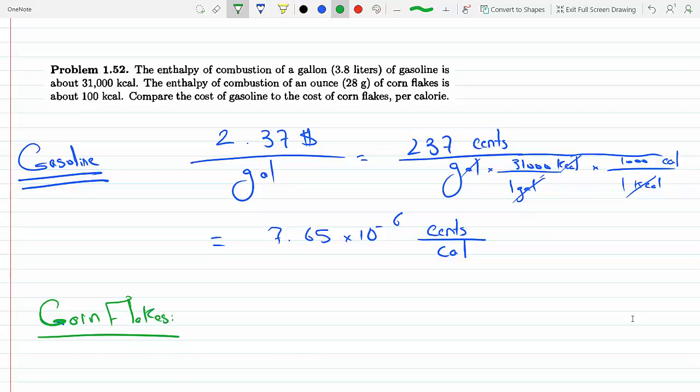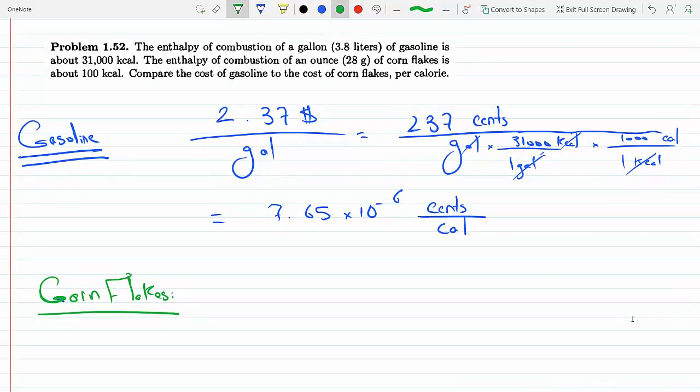It's going to depend on the cost. I looked that up, it's about 12 cents for an ounce of cornflakes. An ounce, we are told, is 100 kilocalories. So let's just say 12 cents divided by 100 kilocalories. Again, every one kilocalorie is a thousand calories.